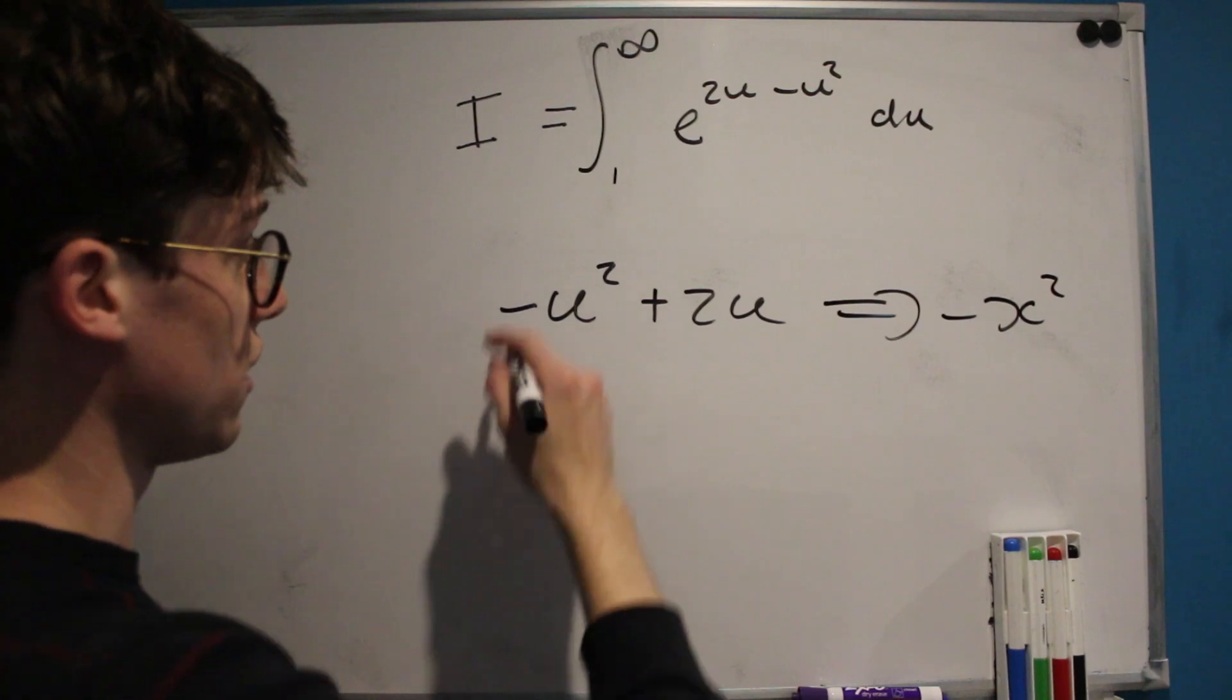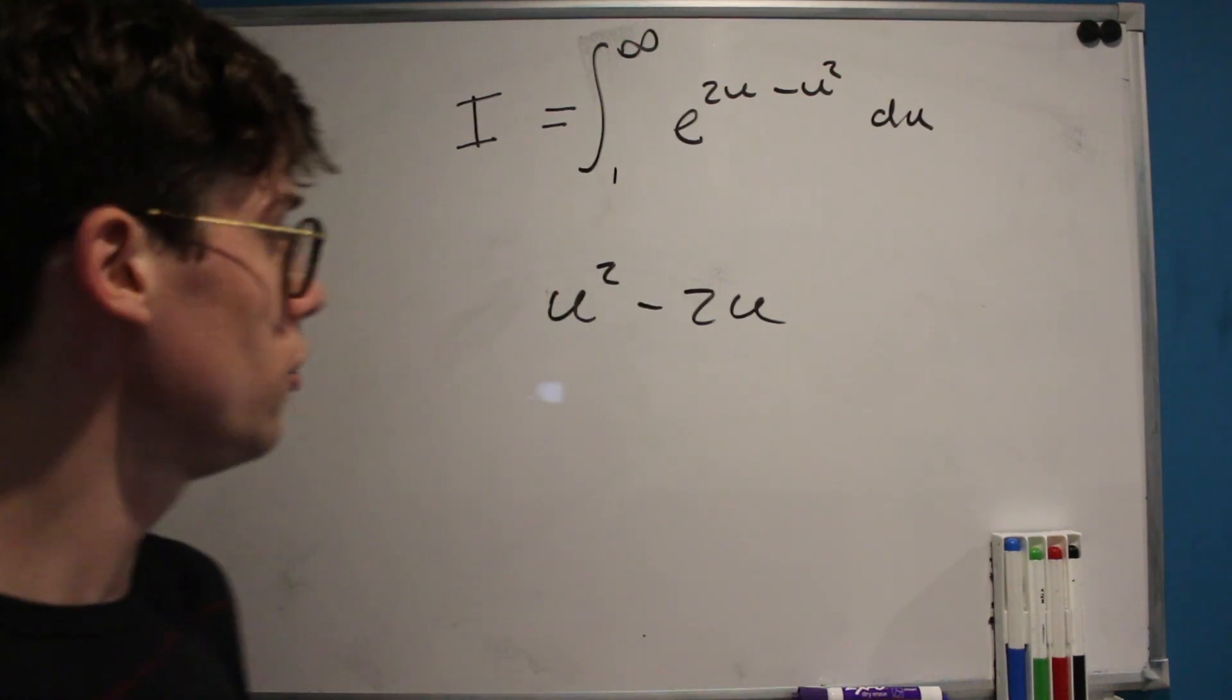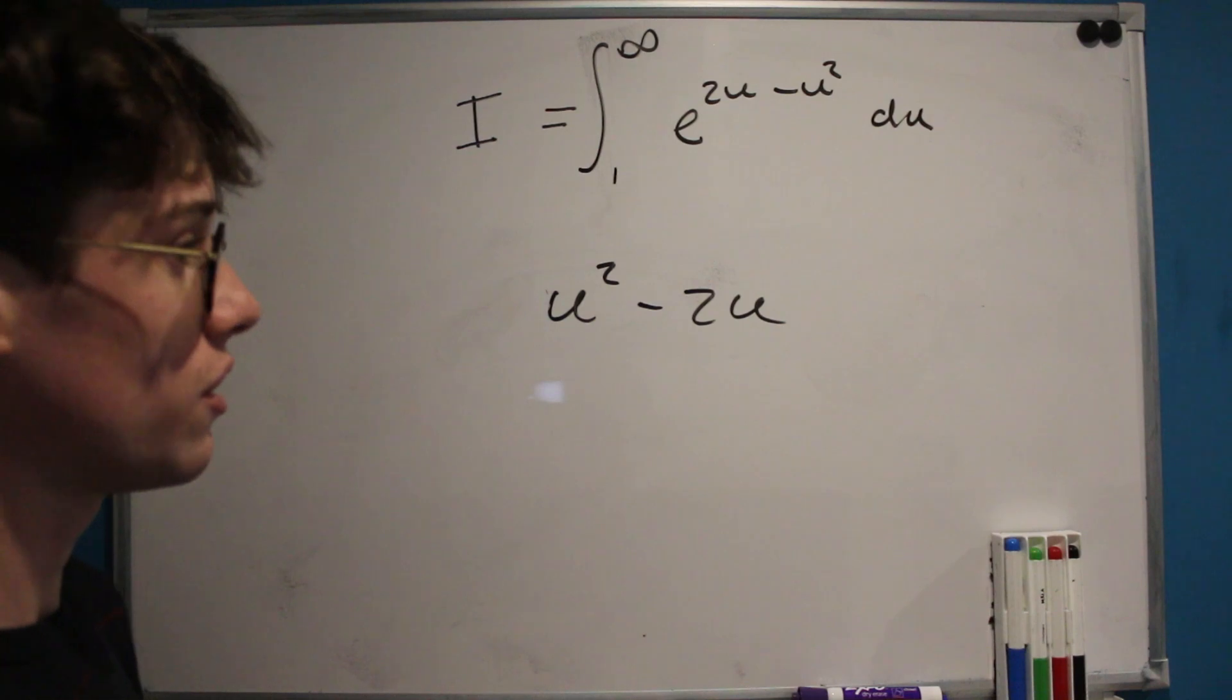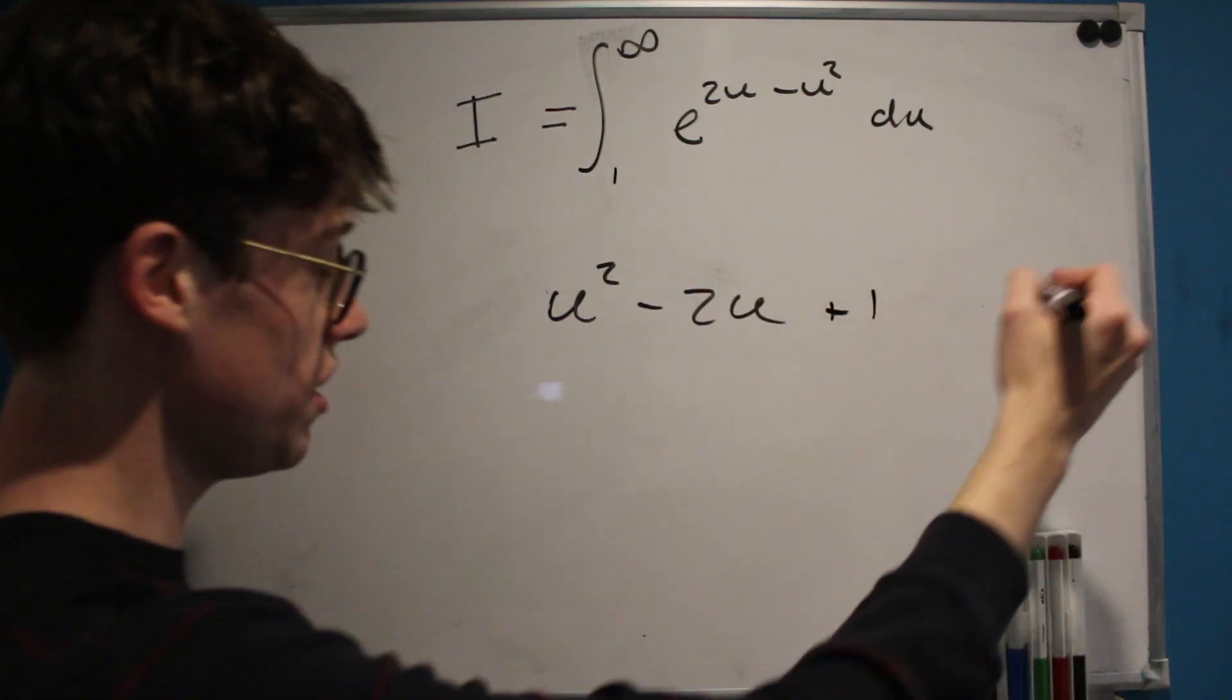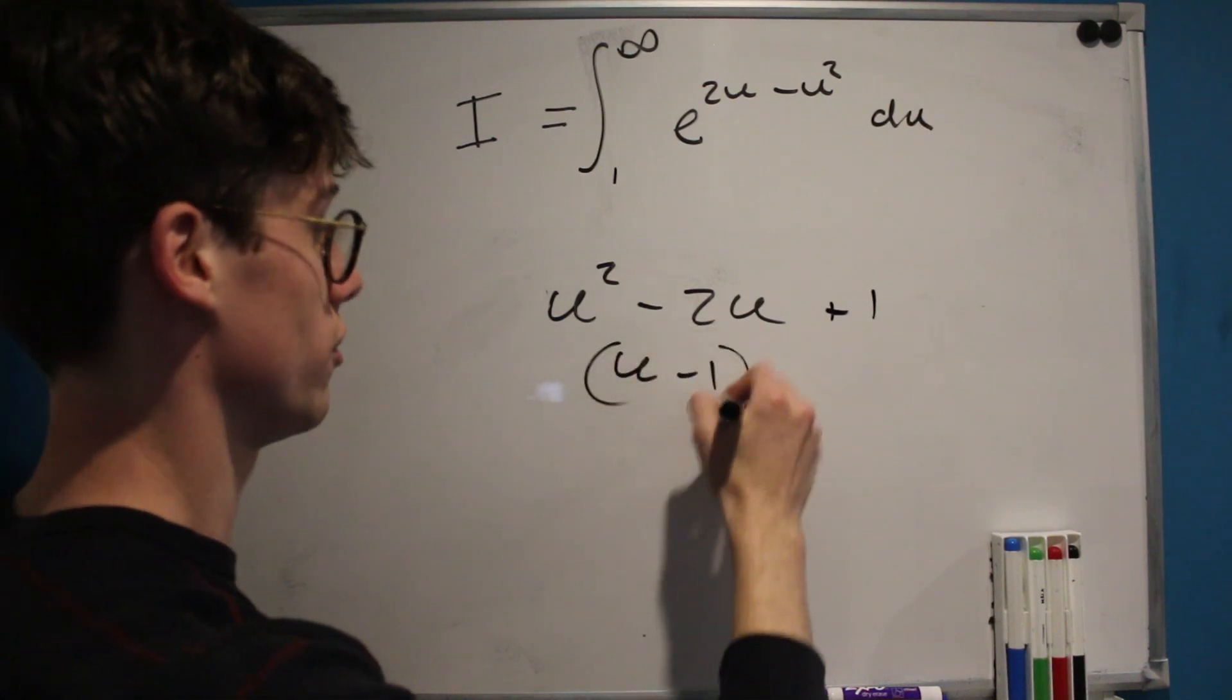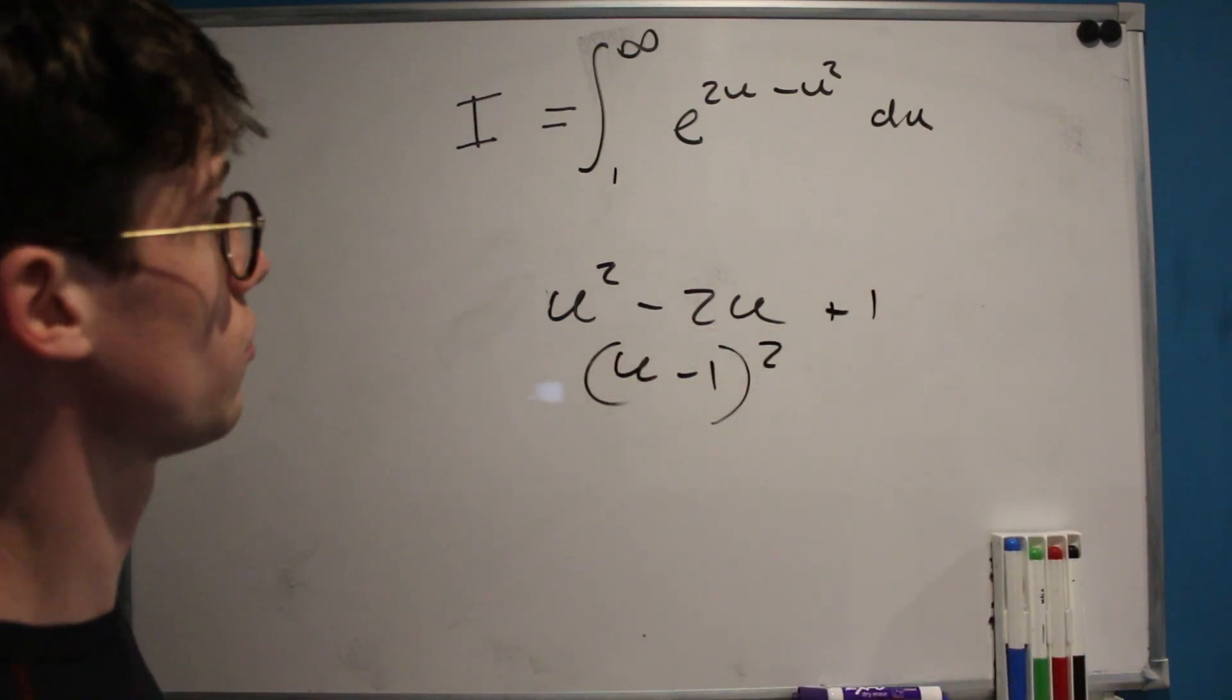And in our case, once we've considered our negatives, we'll think what can we do to make this u squared minus 2u into something factorizable. Well if we add a 1 here, this can clearly be factorized into u minus 1 squared.